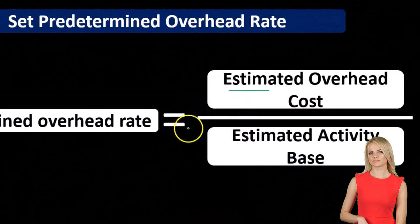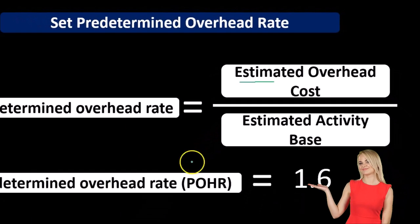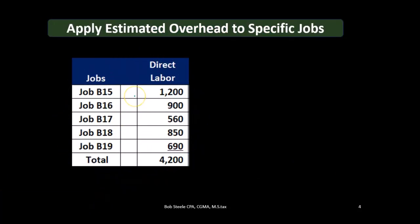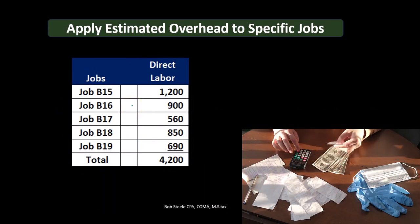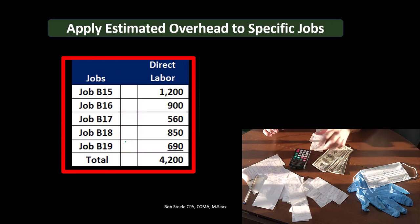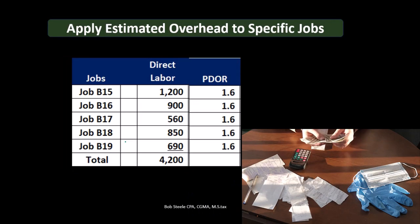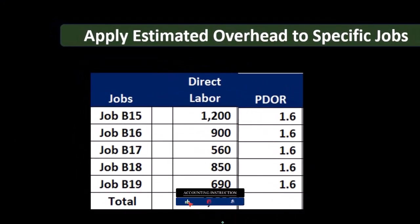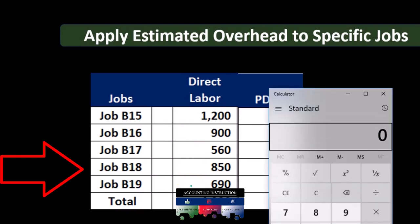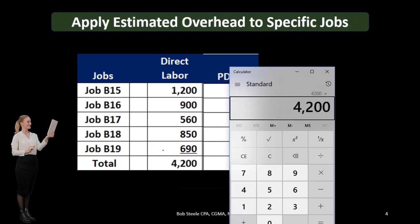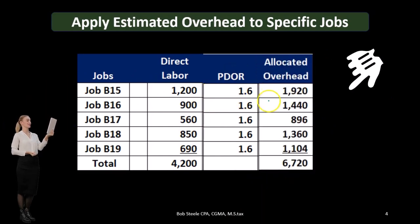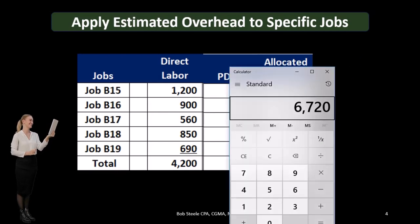So we're going to say estimated overhead divided by the activity base gives us our rate, and we'll use that to allocate. Our predetermined overhead rate is 1.6. We take the direct labor calculated by job and multiply it by 1.6 to apply out the overhead. The total direct labor across all jobs is 4,200; multiplied by 1.6, that gives us 6,720. We can also apply the rate to each individual job, and those amounts will total up to 6,720.